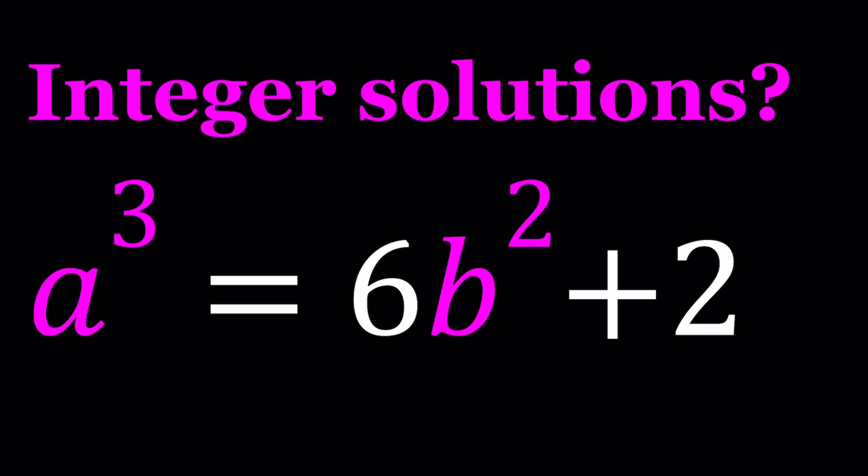So a³, notice that a³ is equal to 6b² + 2. So a³ is an even number, right? A³ is an even integer. Why? Because 6 is even, 2 is even, and the sum of two even numbers is also even. Since a³ is even, that means a is even.